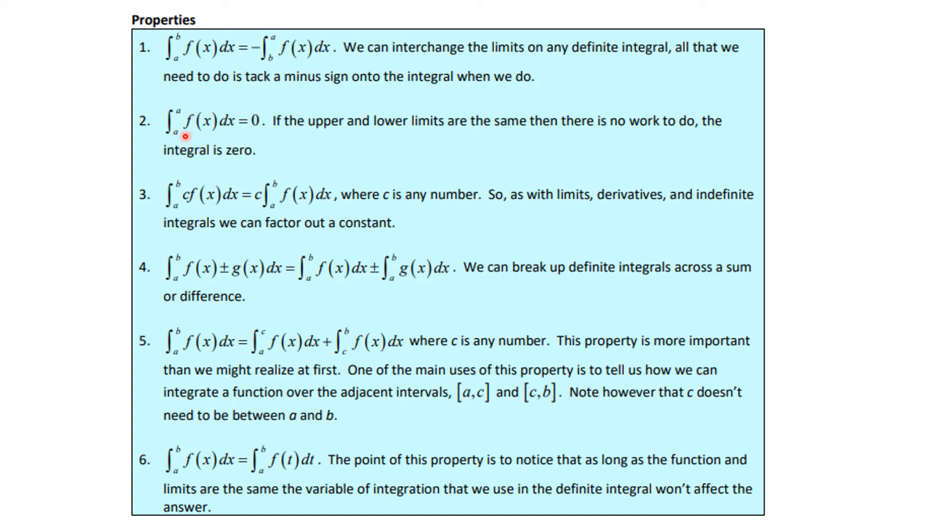Number two: the definite integral from a to a of f(x)dx is equal to zero. If the upper and lower limits are the same, then there's no work to do, the integral is zero. Another way to interpret this is there is no area under a single point.